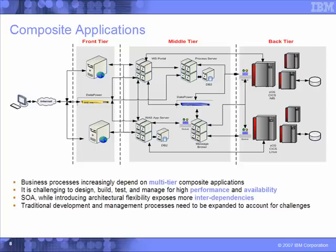As we know by the title of ITCAM, it manages composite applications. But what exactly are composite applications? Well, they usually consist of three tiers: a front end tier with your web servers such as IIS; a middle tier with your application servers and job servers, such as WAS for instance; and then your back end tier consisting of database servers like DB2, CICS, and IMS. So we see we have many separate resources which the data is traveling across. This composite application architecture increases flexibility in our environment, but also exposes more interdependencies.